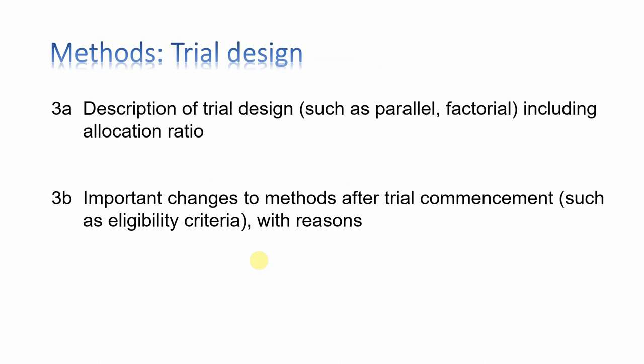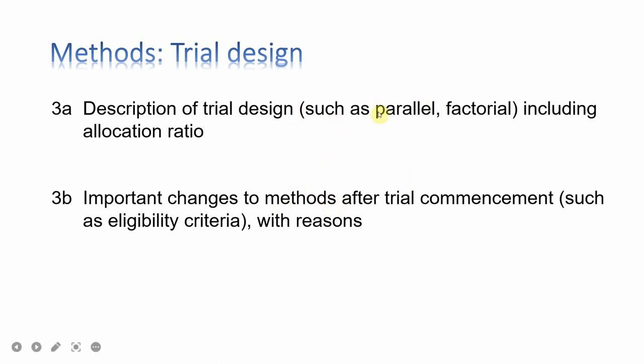The most important part of an RCT is the methodology. The authors should write the trial design, including the allocation ratio — usually 1:1 between the intervention group and the control group. The trial design can be parallel, meaning both groups run simultaneously, or factorial. Also, the methodology should clearly state when and where the trial was done.